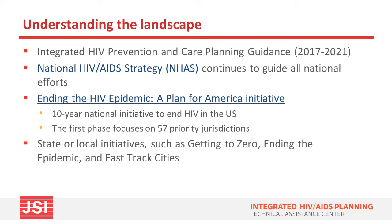The CDC and HRSA first released guidance in 2015 to support the submission of an integrated prevention and care plan. The National HIV AIDS Strategy, or NHAS, continues to guide all national efforts and integrated planning is designed to accelerate progress towards reaching the four NHAS goals and strengthen performance along the HIV care continuum. The goals continue to guide integrated planning and will inform the development of the integrated HIV prevention and care plans for 2022 through 2027. In addition, the Ending the HIV Epidemic Initiative will also help to achieve the NHAS goals. Integrated planning is a way for jurisdictions to demonstrate how they'll coordinate government-funded services, reconcile different planning efforts including the EHE plans, and align funding streams to meet national and local goals.